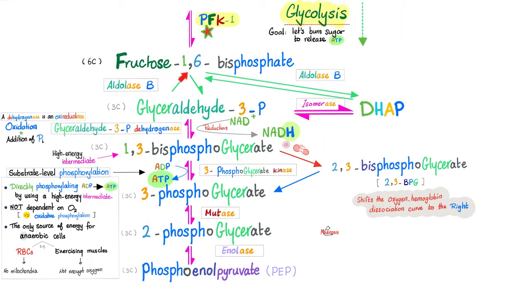Fructose-1,6-bisphosphate then becomes glyceraldehyde-3-phosphate and DHAP. This molecule had 6 carbon atoms but yields 2 molecules each with only 3 carbon atoms. You keep going down through several steps and end up with phosphoenolpyruvate.